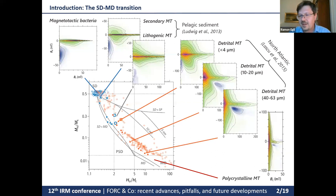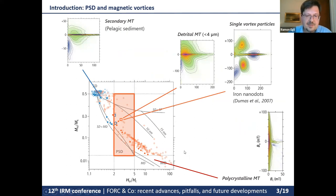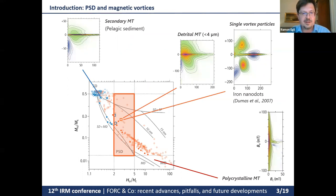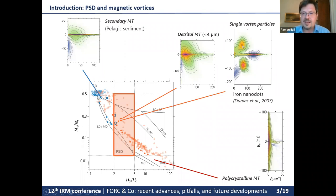However, this is a false impression. In reality there are specific magnetic states defining the PSD range — for instance, single vortex particles. What distinguishes single vortex particles is that they contain a magnetic vortex, which represents an additional magnetic state beyond the single domain state. These particles have more than one type of magnetic state, and the interplay between states generates more complex FORC signatures: a central region like in single domain particles, but also lobes above and below the central ridge.